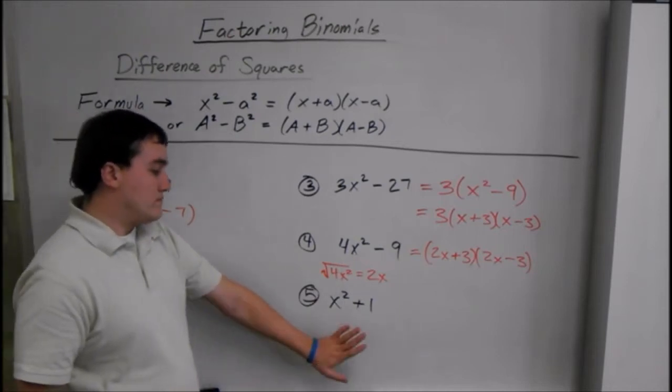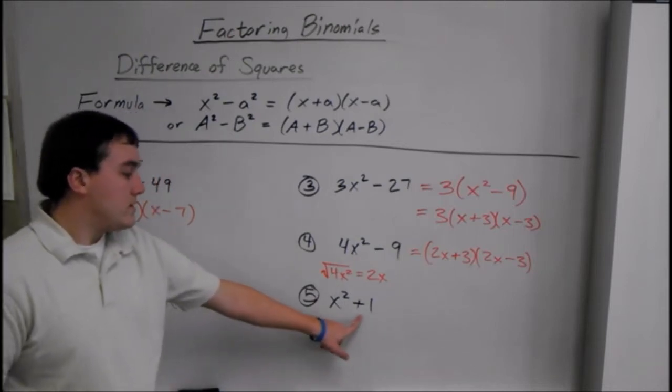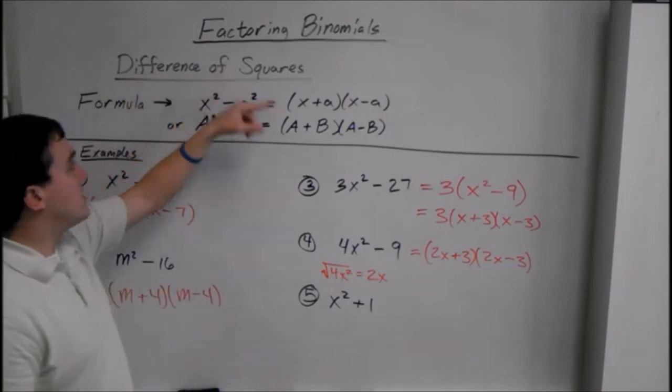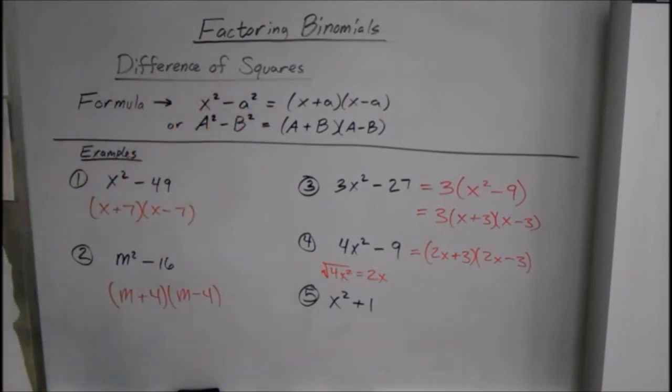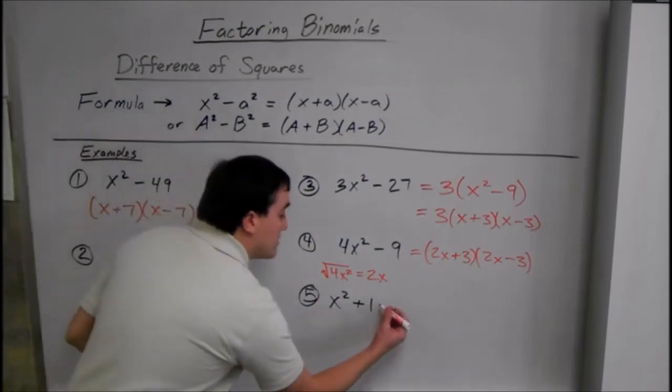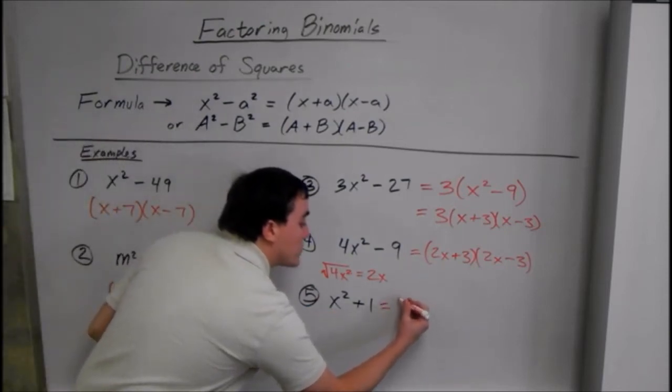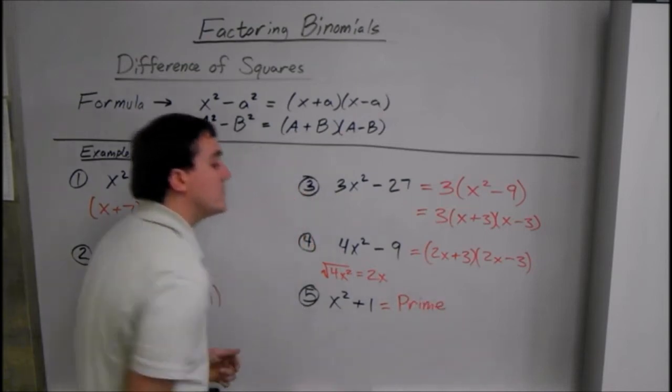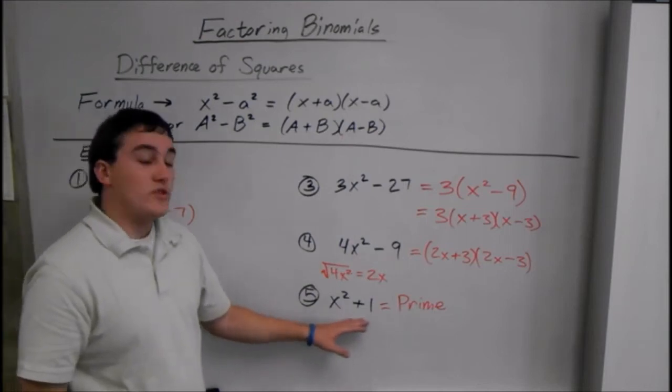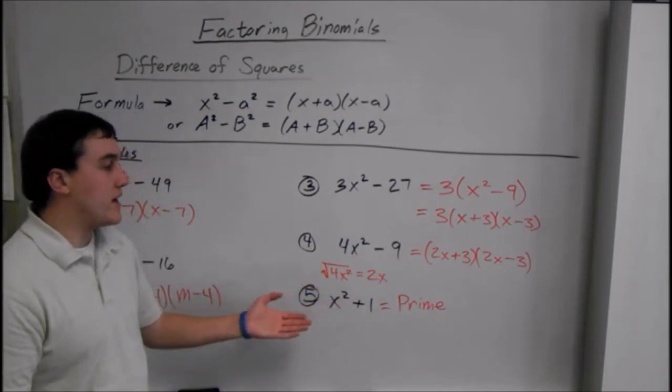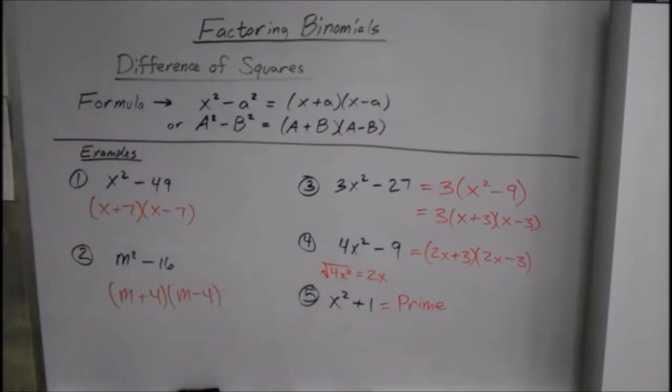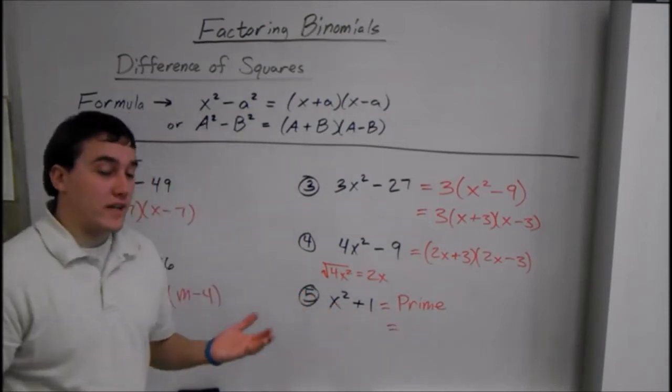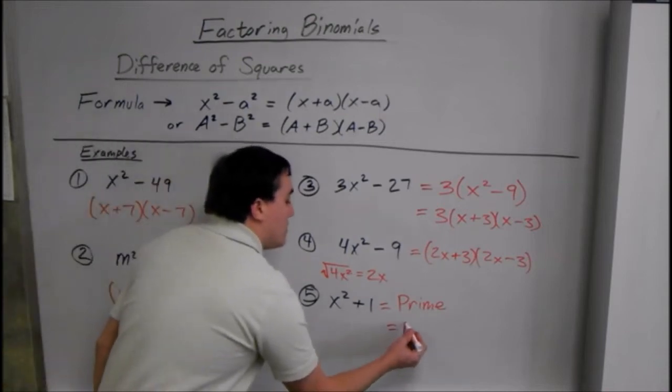Then we have one more. But this time it's plus. And notice this is the difference. Difference means subtracting. Difference of squares. You actually cannot factor this. This is not factorable. Or as we say, prime. In math. Because to factor this, you need imaginary numbers. And we don't deal with that in math for college readiness or intermediate algebra. So that's all you have to say here. You say this polynomial is prime. It cannot be factored. Or not factorable.